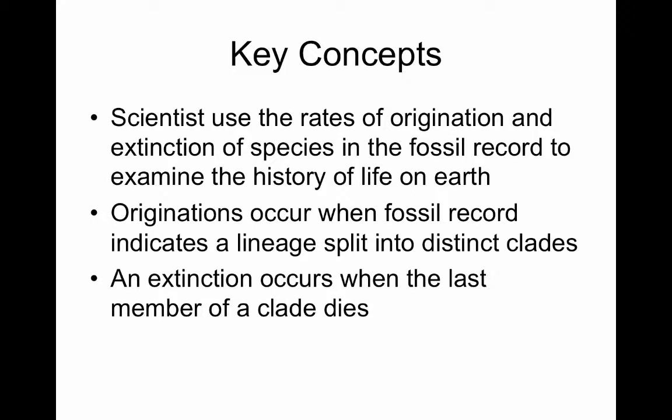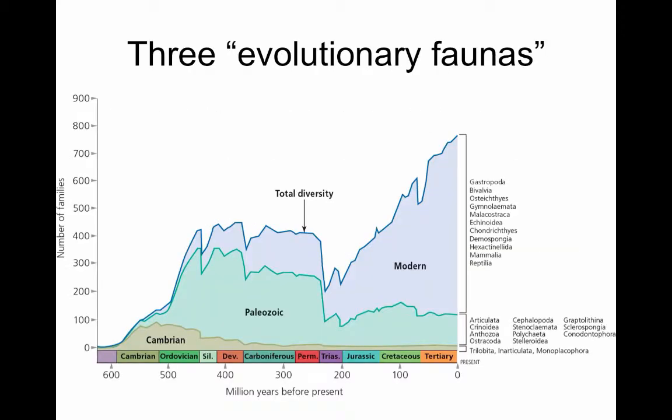Using origination and extinction in the fossil record, we can look at the history of life on Earth and indicate when new lineages arose from splitting of previous ones. Over time, there have been three named faunas: the Paleozoic, Mesozoic, and modern faunas — sometimes the Triassic, Jurassic, and Cretaceous are lumped in with the modern. It's also worth noting that there's a big bias towards more specimens in the modern record because they're more recently deposited and there's been less time for erosion and other forces to cause their loss.